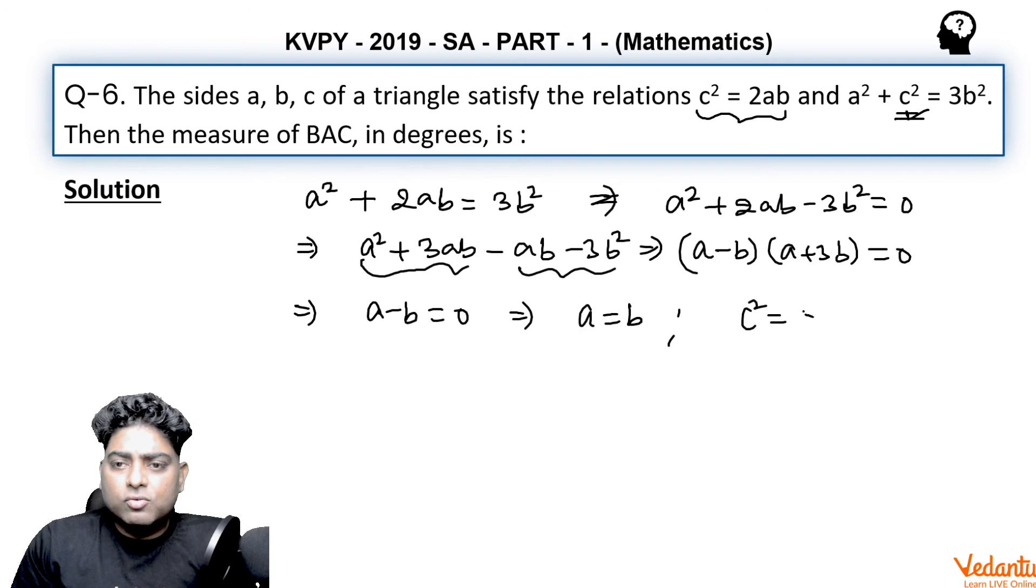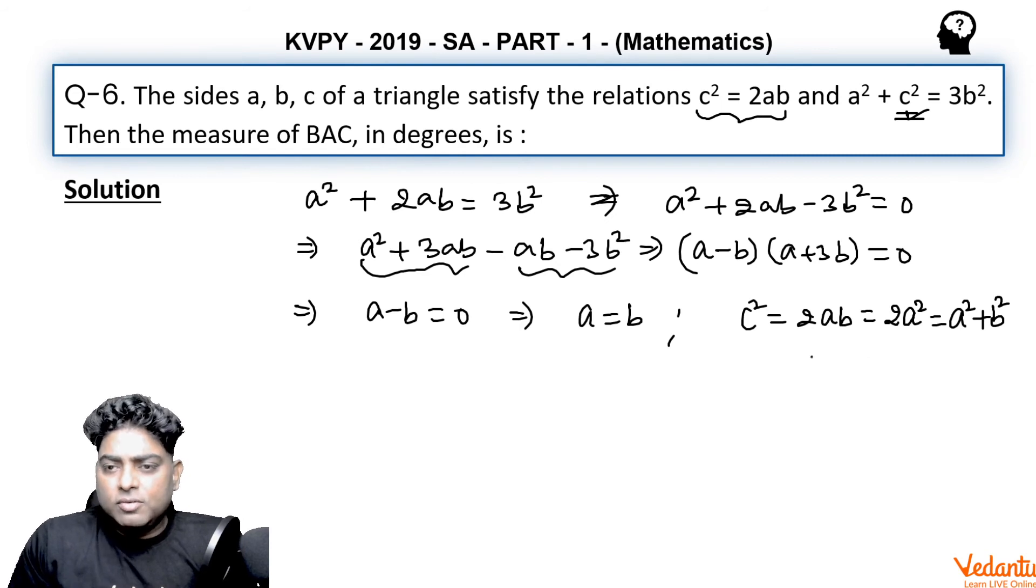Again, c² = 2ab, and since b = a, I can write it as c² = 2a². And 2a² can be written as a² + a², which is a² + b² because b equals a. So we can say that c² = a² + b², which means the triangle is a right-angled triangle.